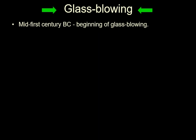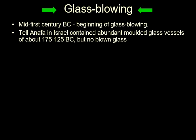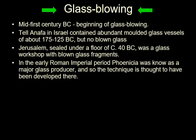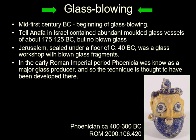Glass blowing. This seems to date from about the mid-first century B.C. There was a site at Tel Anafa in Israel in which they had a lot of molded glass vessels dated to about 175 to 125 B.C., but not a single piece of blown glass. So, presumably, since this is probably a glass production centre, they weren't making blown glass. However, in Jerusalem, sealed under a floor about 40 B.C., was a glass workshop filled with blown glass. So, sometime between 40 B.C. and 125–175 B.C., they started blowing glass. In the early Roman imperial period, Phoenicia was known as a major glass producer, so the technique is thought to have been developed there.